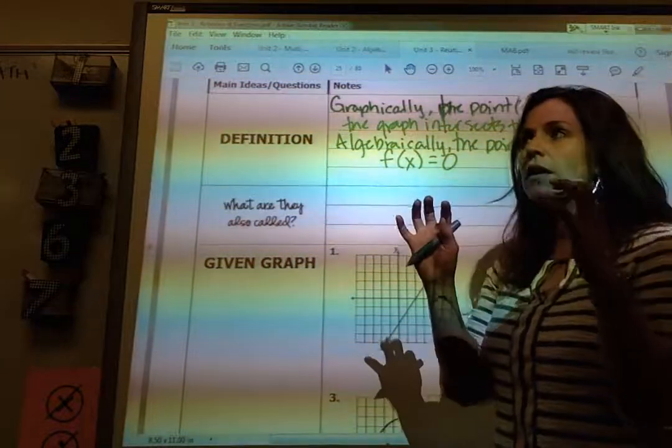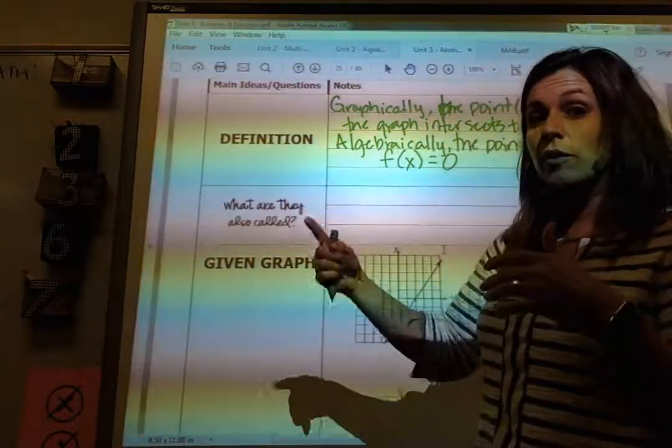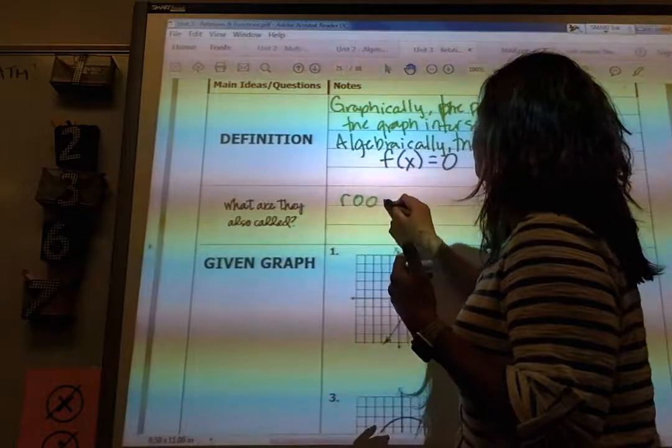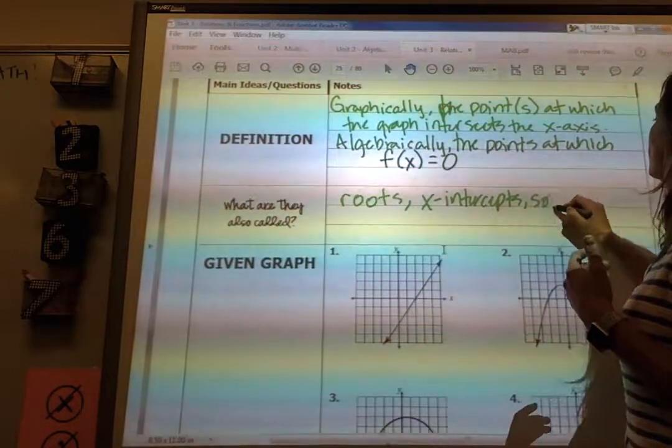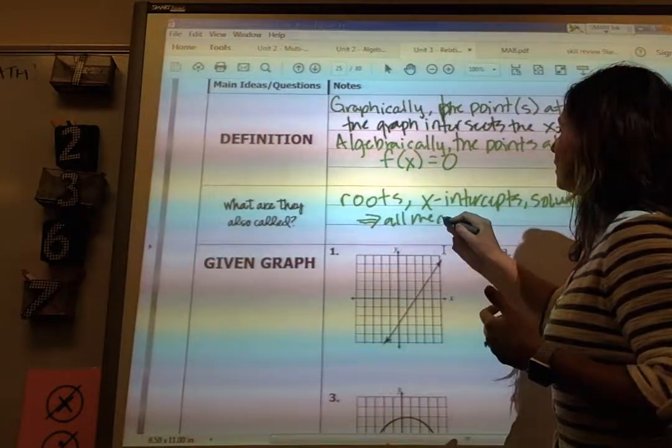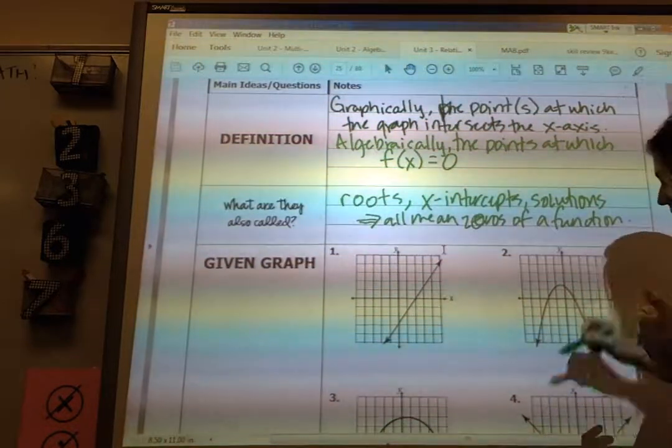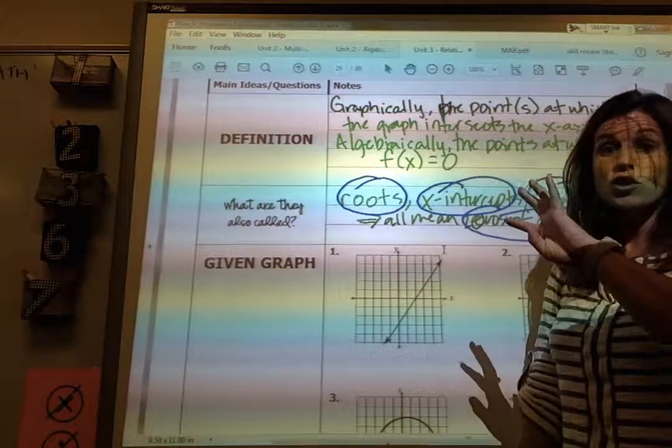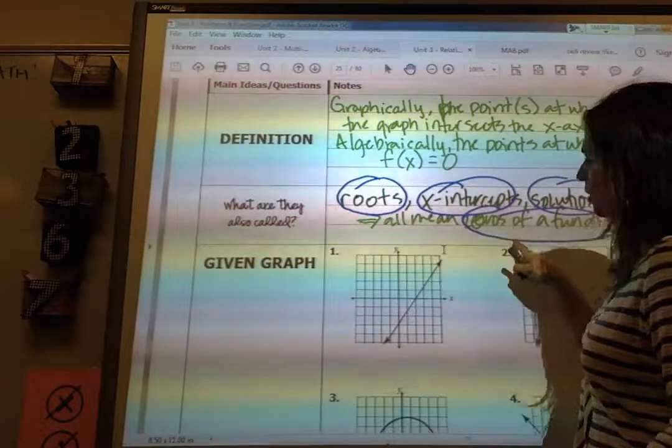Okay, there are a lot of vocabulary words that can be called zeros of functions, and they all mean the same thing. Anytime you hear me say roots, x-intercepts, and solutions, they all mean zeros of a function. So four words, four synonyms to describe one thing.